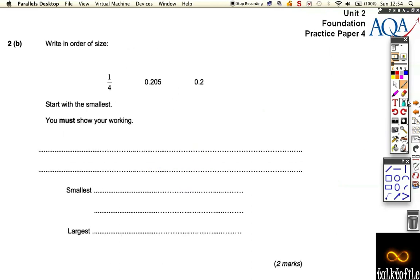Part B asks you to write them in order of size with the smallest first. Well, we need to convert them all to the same thing. So we need to convert them all to decimals, or we convert them all to fractions, or we convert them all to percentages.